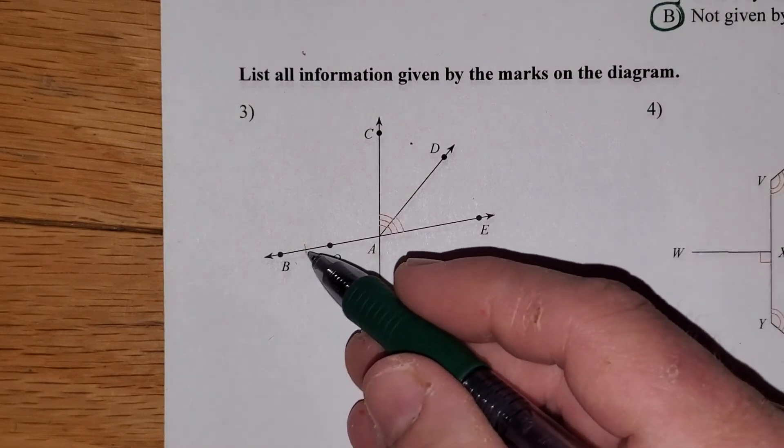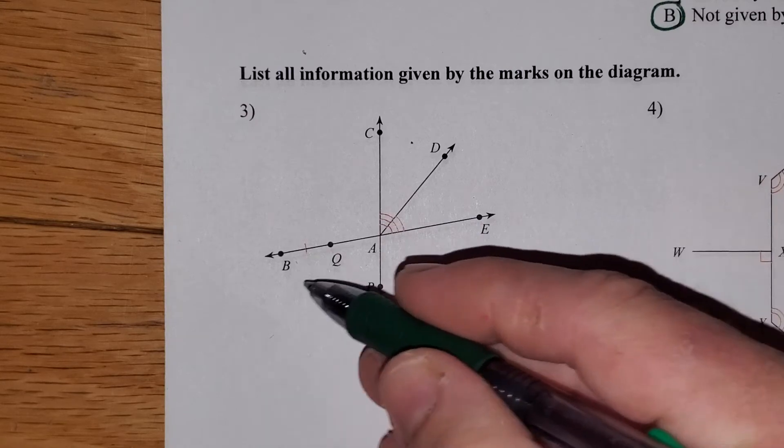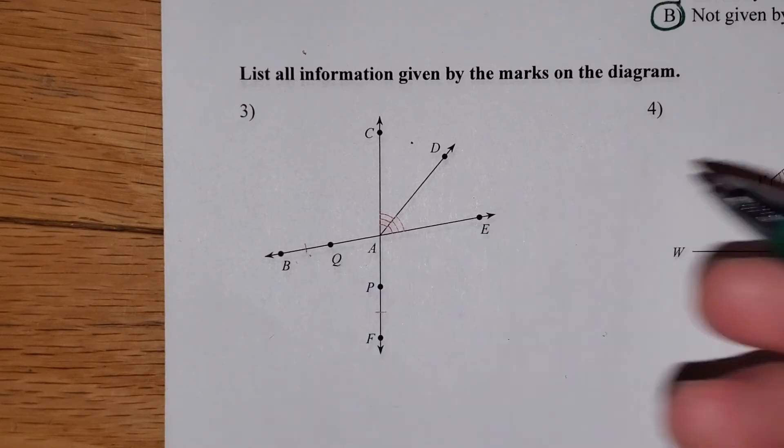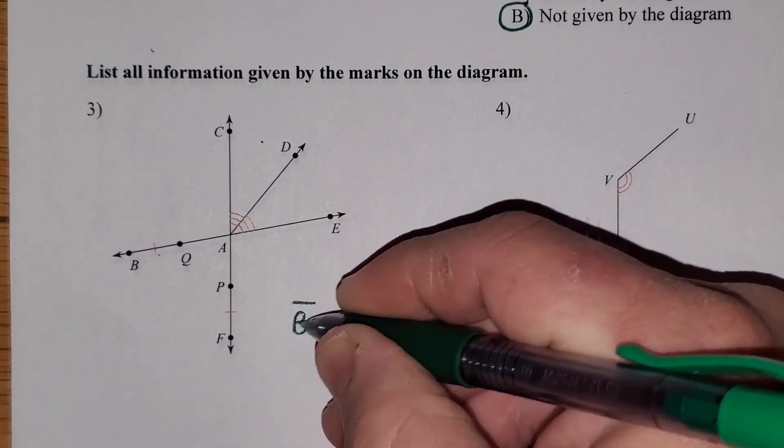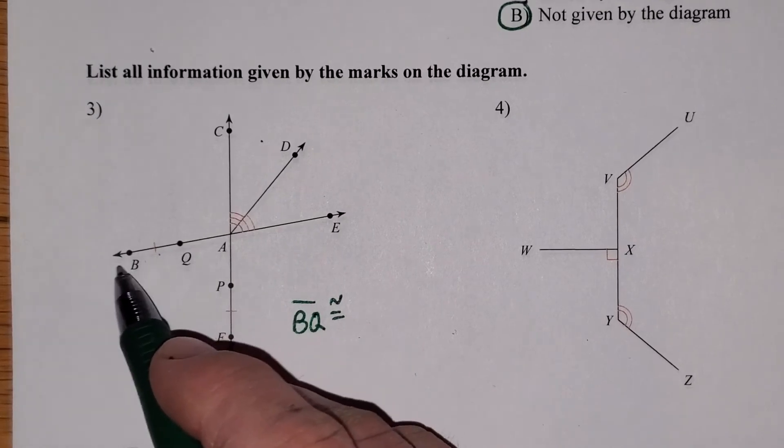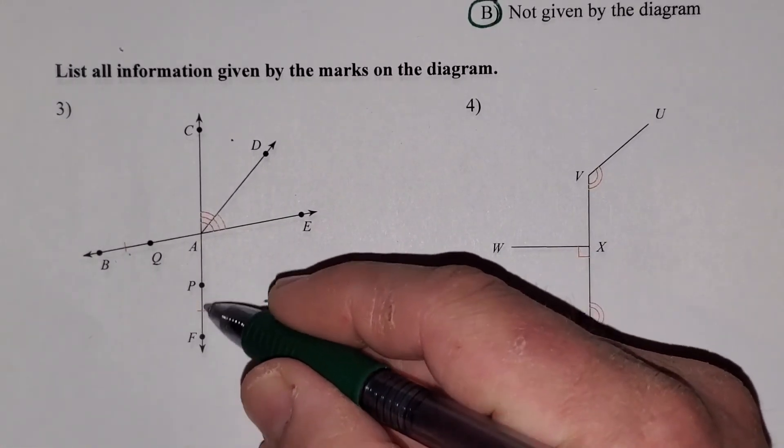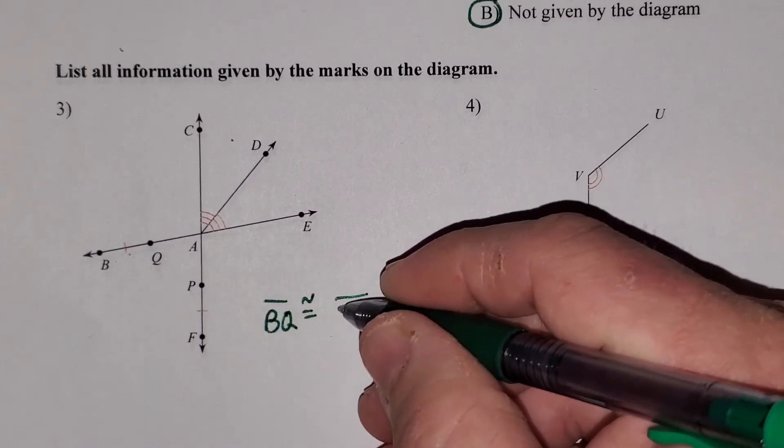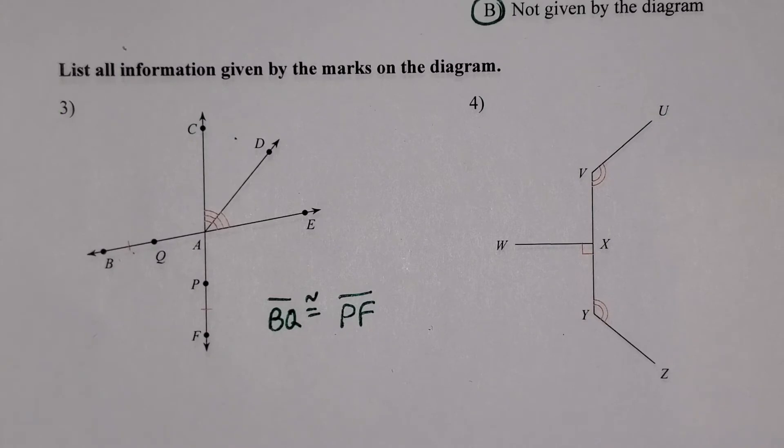Here, they have actually shown segments are equal. They are doing this with these little tick marks here on the segments. Let's go ahead and name those congruent segments. So we actually have segment BQ, and they might call it QB instead, is congruent to segment PF or FP. The order doesn't matter the layers, but they would be using those layers to indicate those segments.